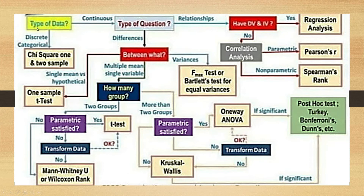We first determine what type of data we have. If it is qualitative — meaning discrete or categorical — we will use the chi-square test. If it is quantitative or numerical, meaning continuous, we move further down the decision tree.